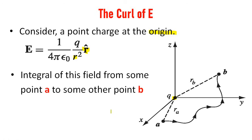Let us integrate this field from some point A to a point B. The point A is at a distance Ra from the origin and point B is at a distance Rb from the origin.